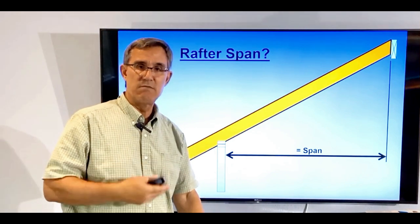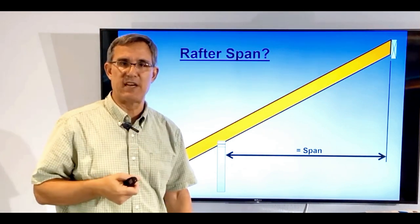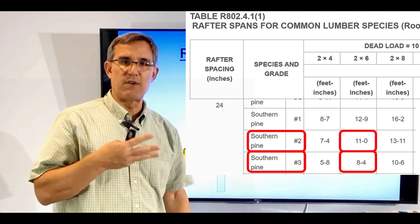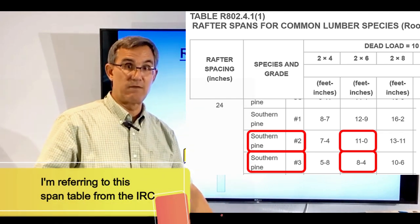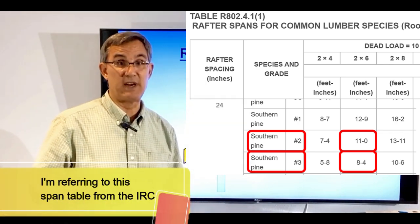see ten foot six, you know you're fine. Remember, because you use that span table. If you're using number three lumber and it's ten foot six, you've over-spanned that eight foot four, so you have over-spanned it.